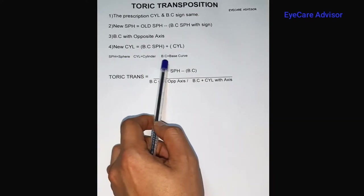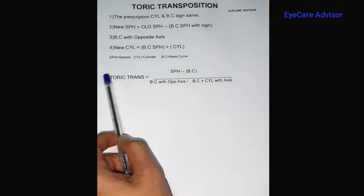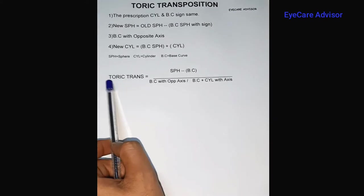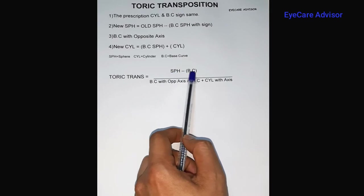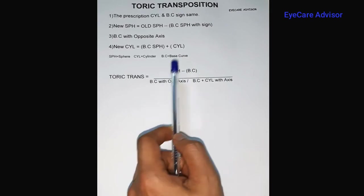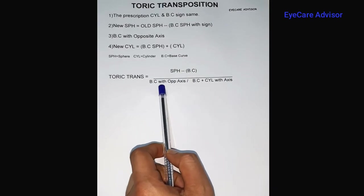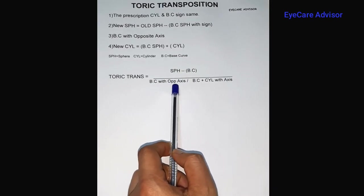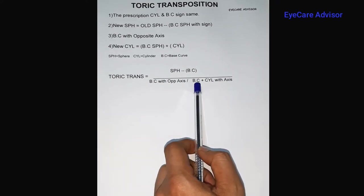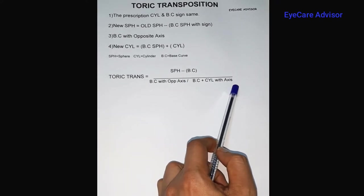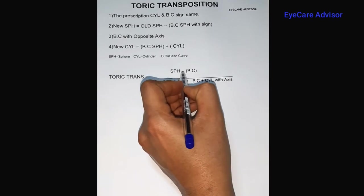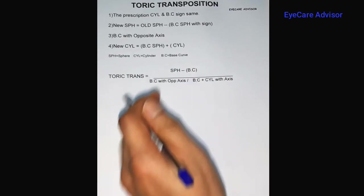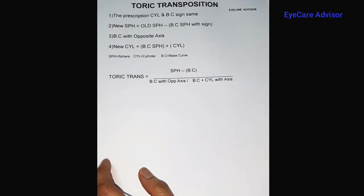So for the toric transposition formula: the new sphere equals old sphere minus base curve; the denominator is base curve with opposite axis; and the new cylinder is base curve plus cylinder with axis. To understand this better, I will show you some examples, and then it will be easy for you.